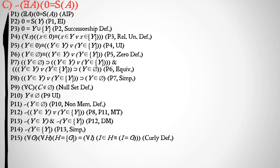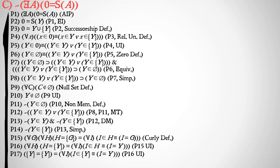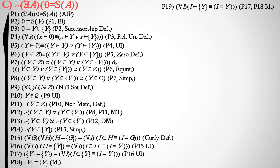We start with the definition of curly brackets from earlier in the set theory series: for all G and all H, H equals the set of G if and only if for all I, I is a member of H is materially equivalent to I equals G. We universally instantiate Y for G and the set of Y for H. Using identity — the set of Y equals the set of Y — we satisfy the left side of the biconditional and extract the right side: for all I, I is a member of the set of Y if and only if I equals Y.